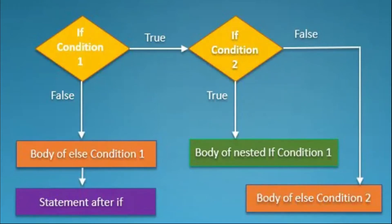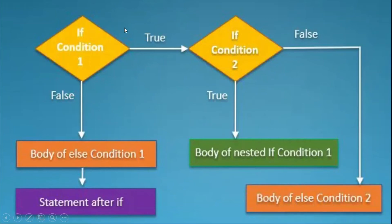This is the flowchart of a nested if. With nested if, you can define multiple conditions in a series of if statements. If condition one is true, you proceed to condition two; if condition two is true, the nested if body executes; if false, the else for condition two runs. If condition one is false, the else for condition one runs. Nested if is a series of if-else statements allowing multiple conditions. Let us have an example in Eclipse.